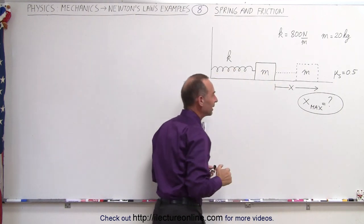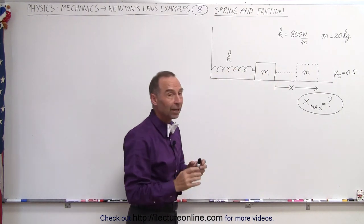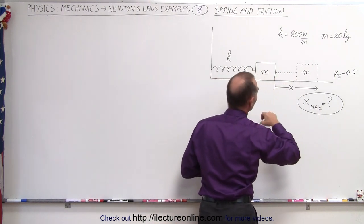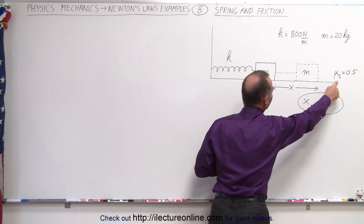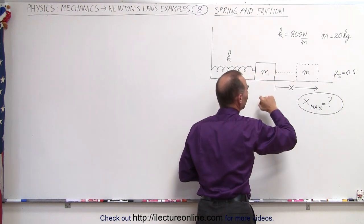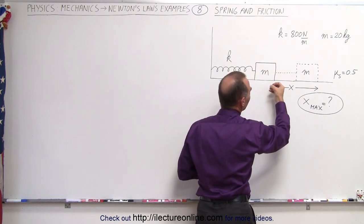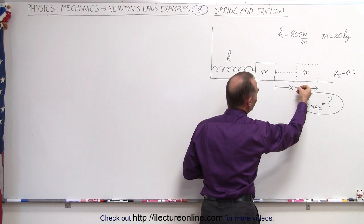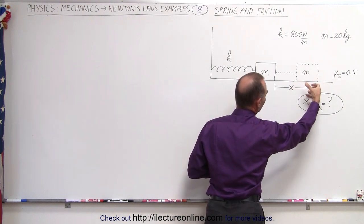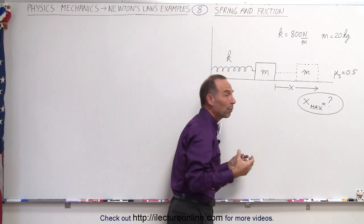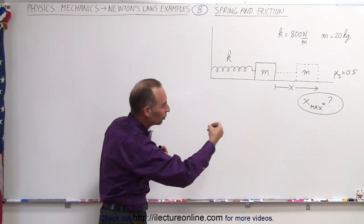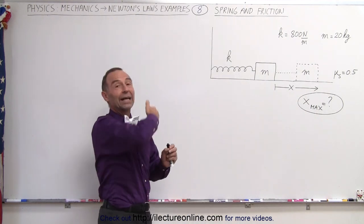The mass has a mass of 20 kilograms. What we're going to do is pull the mass to the right. There's a coefficient of static friction between the surface and the mass of 0.5. We're going to pull it to the right, hold it stationary, let go, and pull it further right. What we want to know is: what is the maximum distance we can pull the mass before it starts sliding back?